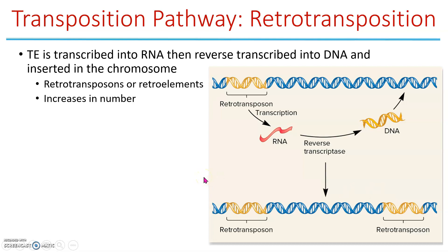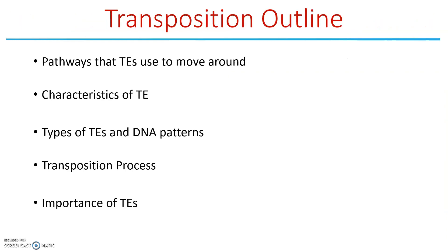Then we have retrotransposition, which should look very familiar and put you in the mindset of retroviruses. A retrotransposable element in our DNA is made into an RNA — we transcribe it from DNA to RNA without necessarily removing it. That RNA is then converted back into DNA by reverse transcriptase and inserted somewhere else. So where we had one copy, now we have two. Those are the two pathways: simple and retro.